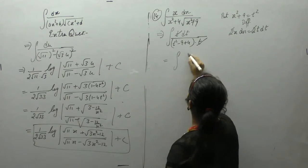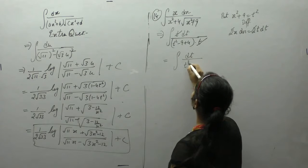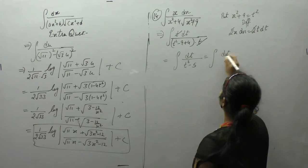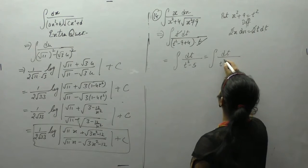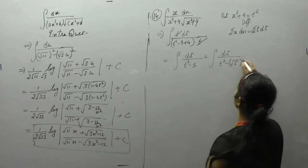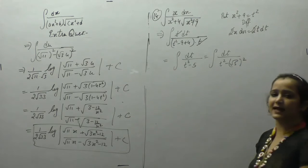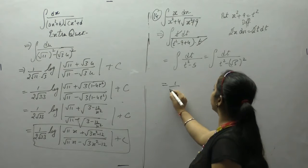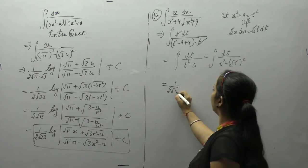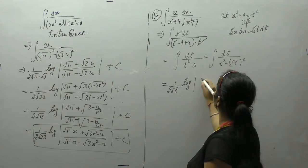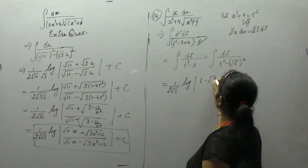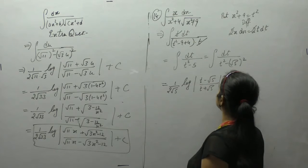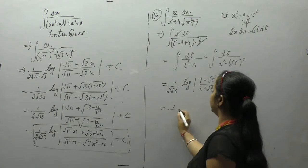This gives the integral of dt upon t² minus 5, where we can write 5 as (√5)². Using the standard formula: the integral of 1 upon x² minus a² equals 1 upon 2a times log of (x minus a) upon (x plus a), plus C.